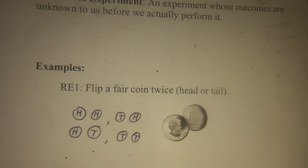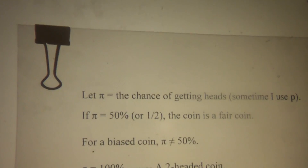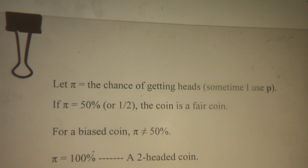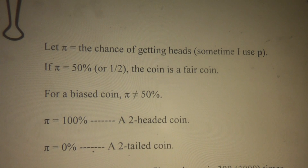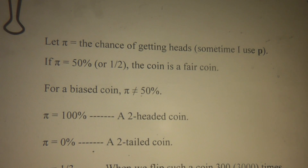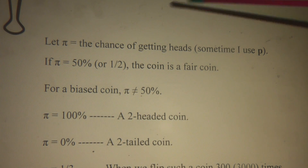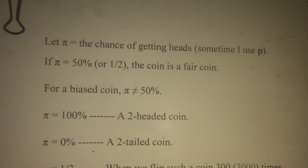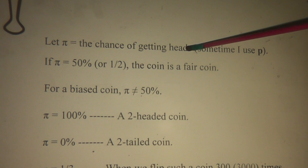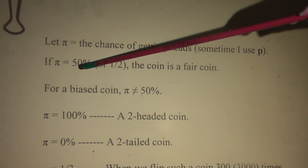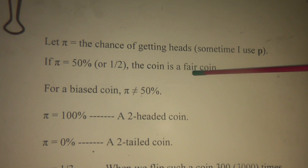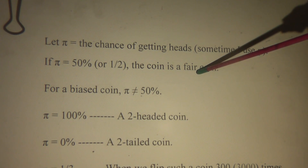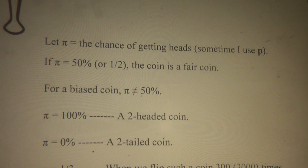Let me introduce the fair coin. When I say fair coin, what does that mean? Let me define π as the chance of getting heads. π equals 50%, or one-half. The coin is called a fair coin. When you flip such a coin, you have a 50% chance to get a head and a 50% chance to get a tail — 50-50. That's why we call it a fair coin.